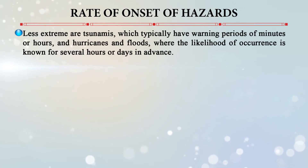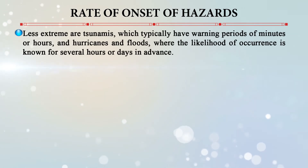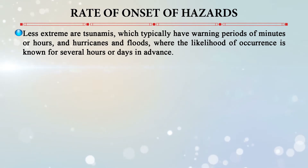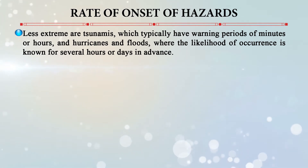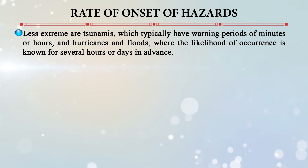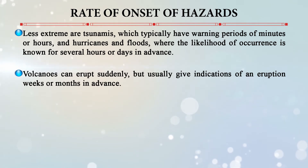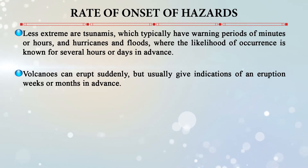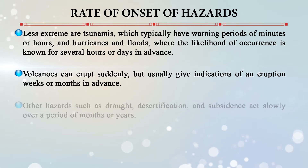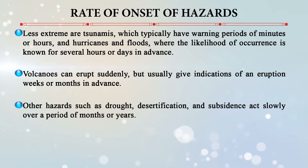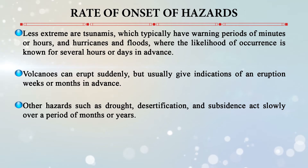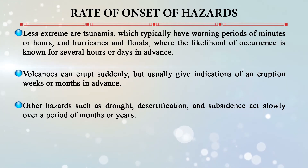At one extreme, earthquakes, landslides, and flash floods give literally no warning. Tsunamis typically give warning periods of minutes or hours. Hurricanes and floods can give warnings several hours or even days in advance. Volcanoes can erupt suddenly, but usually provide indications of eruption weeks or months in advance.